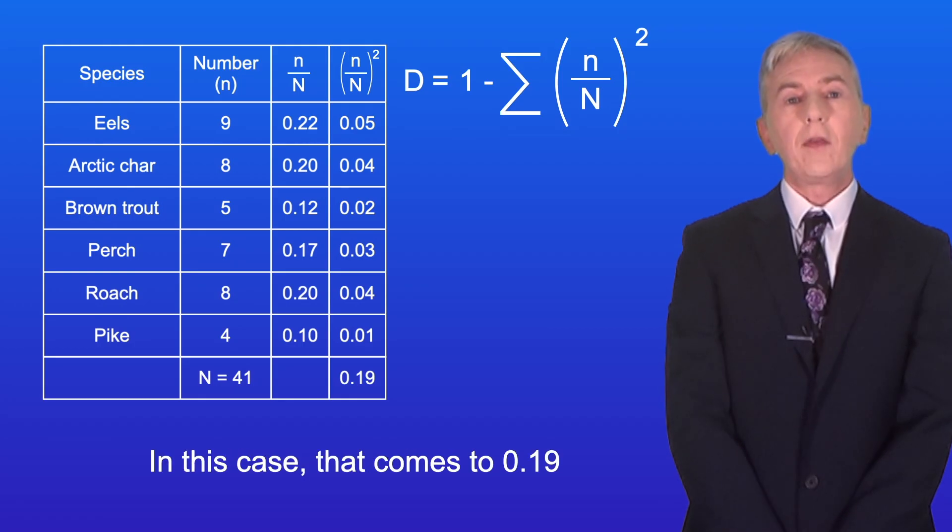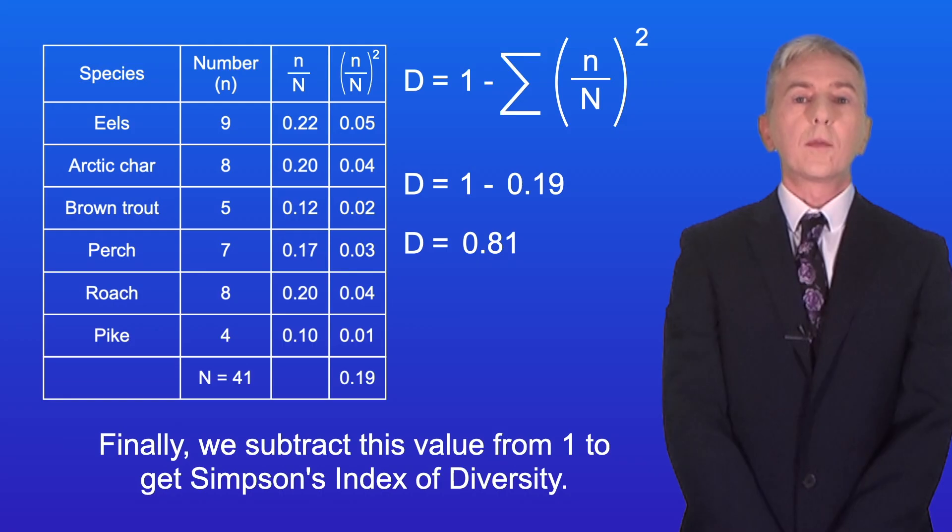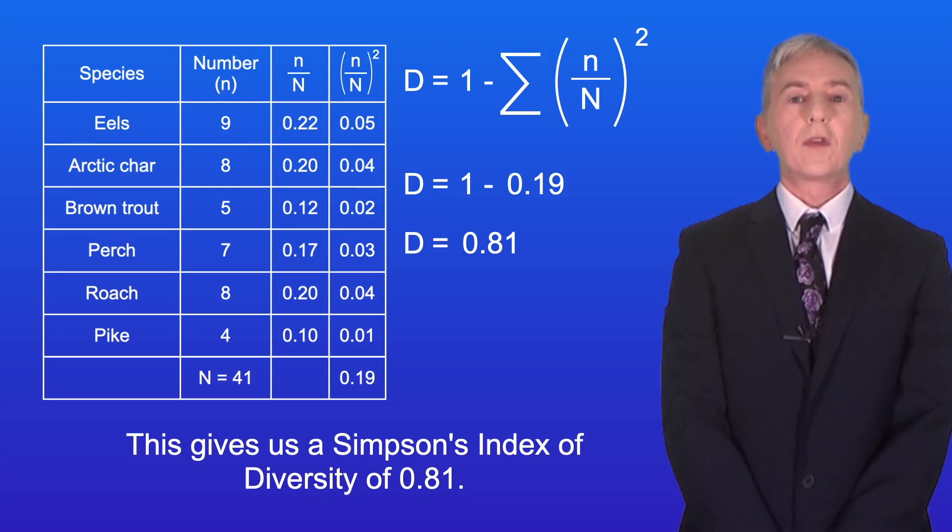Now we sum these. In this case that comes to 0.19. And finally we subtract this value from 1 to get Simpson's index of diversity. This gives us a Simpson's index of diversity of 0.81.